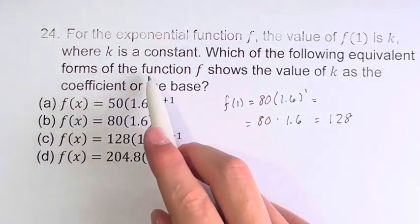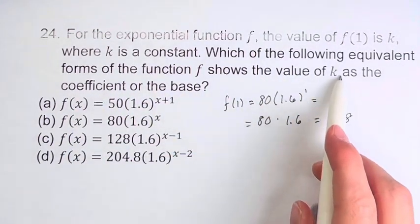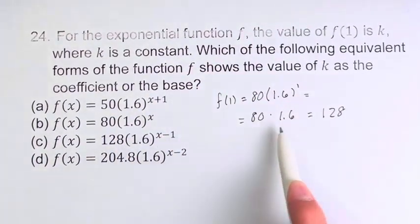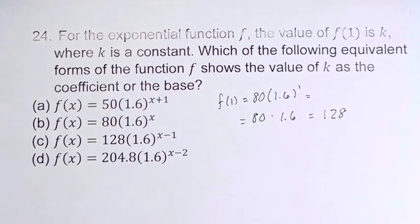So which of the following equivalent forms of the function shows the value of k as the coefficient or the base. If you look at all of these, we're looking for 128, we find it in c, which means that c is our final answer.